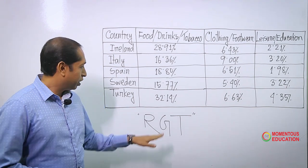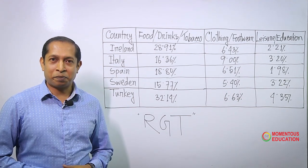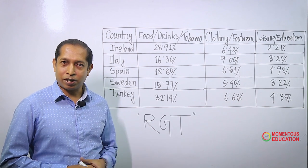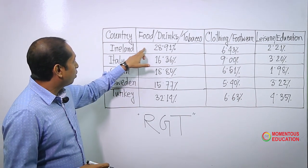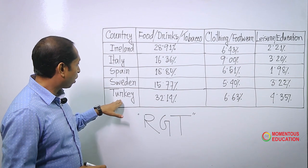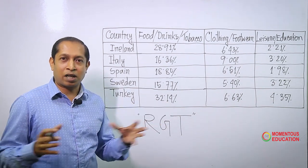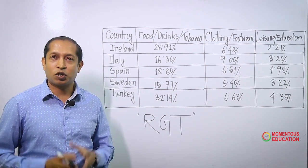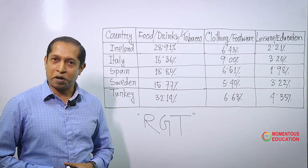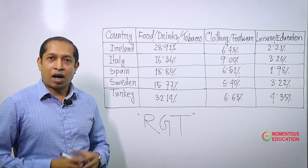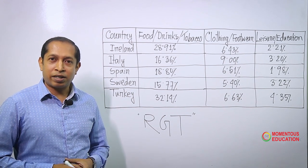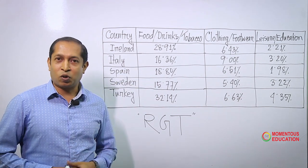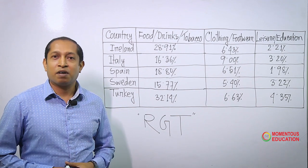What about G? G means grouping — that means the ones that are similar, we can group them together. If we look at the chart, Ireland 28.91 and Turkey 32.14 — that means they are very close to each other. So, we can say that for food and drinks, Ireland and Turkey spend the most, on average around 30 percent, whereas other countries spend about half of them, on average 15 percent.